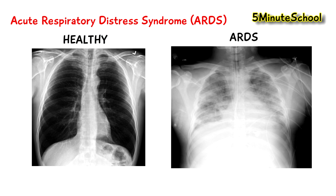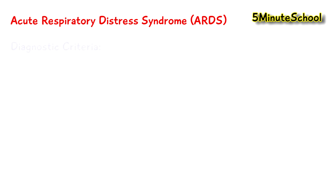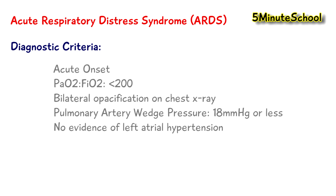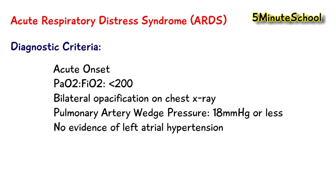For the official diagnostic criteria for ARDS, it needs to be an acute onset — happening very rapidly. The ratio of partial pressure of oxygen to fraction of inspired oxygen (PaO2/FiO2) must be 200 or less. The x-ray needs to show bilateral opacification, pulmonary artery wedge pressure needs to be 18 mmHg or less, and there must be no evidence of left atrial hypertension.